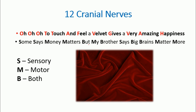Starting with the first sentence: the first O is Olfactory, the second O is Optic, the third O is Oculomotor, the first T is Trochlear, the second T is Trigeminal, the A is Abducens, the F is Facial, the V is Vestibulocochlear, the G is Glossopharyngeal, the next V is Vagus, the A is Spinal Accessory, and the twelfth is Hypoglossal.